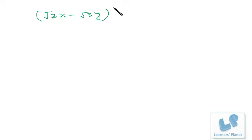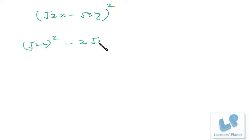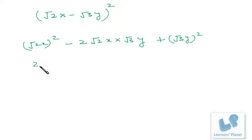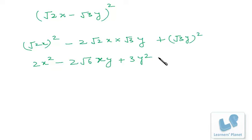For (√2·x - √3·y)², we use (a-b)² again. Squaring √2·x gives 2x²; minus 2·(√2·x)·(√3·y) = 2√6·xy; plus squaring √3·y gives 3y². So the expansion is 2x² - 2√6·xy + 3y².